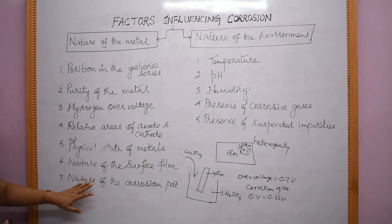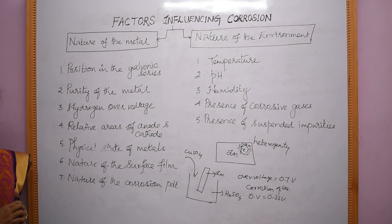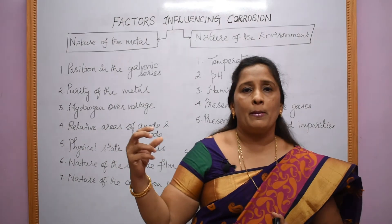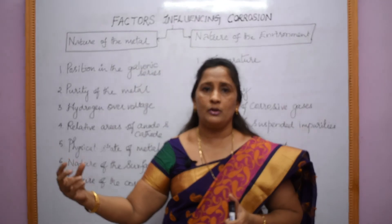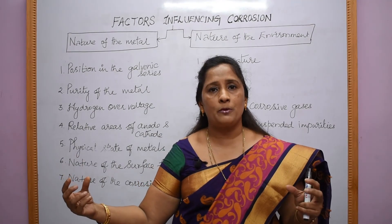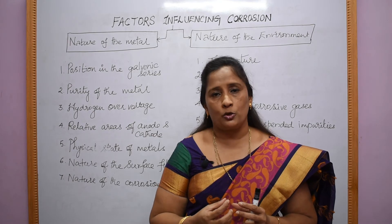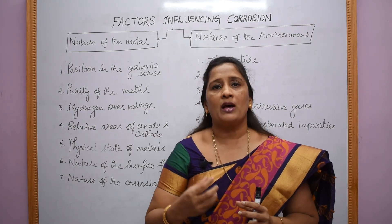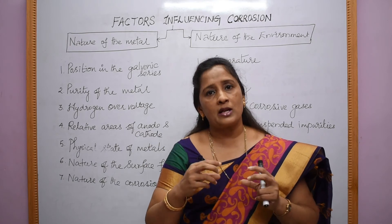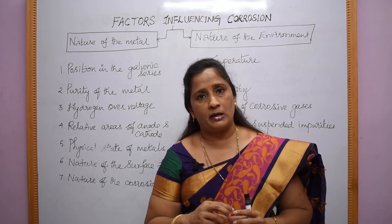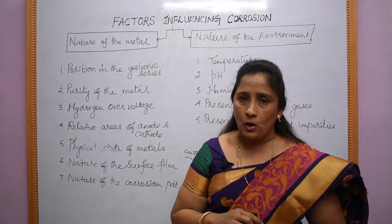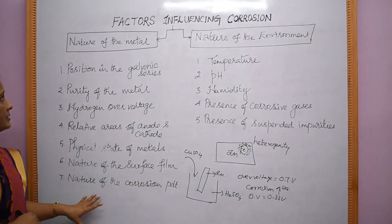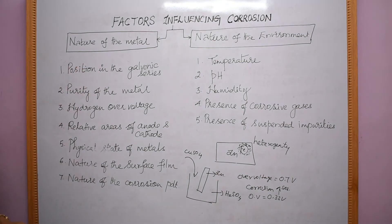The seventh factor is the nature of the corrosion product. When metallic ions produced at the anode and non-metallic ions produced at the cathode combine, they form the corrosion product. If the corrosion product is soluble, further corrosion will happen; if the corrosion product is insoluble, further corrosion will not occur.